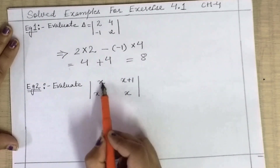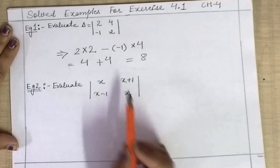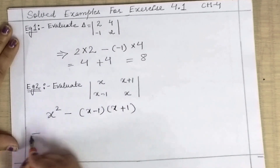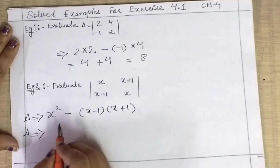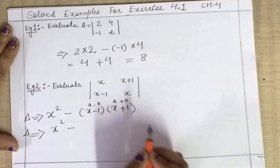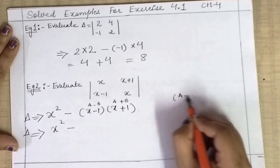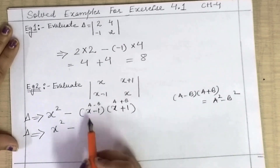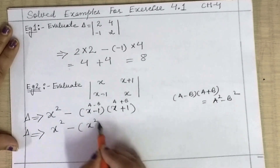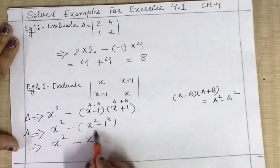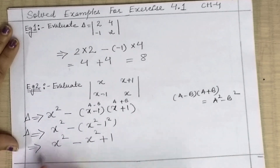Example 2: evaluate this determinant. This times this minus this times this. So x squared minus (x minus 1)(x plus 1). Here we use the identity: (a minus b)(a plus b) equals a squared minus b squared. So x squared minus (x squared minus 1). The x squared terms cancel, and your final answer is 1.